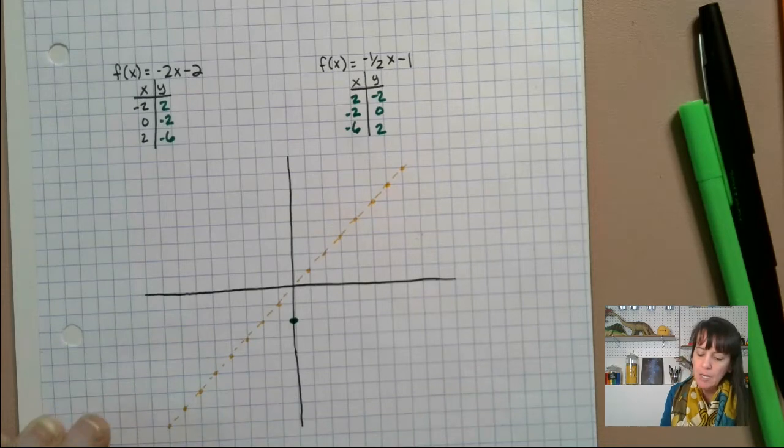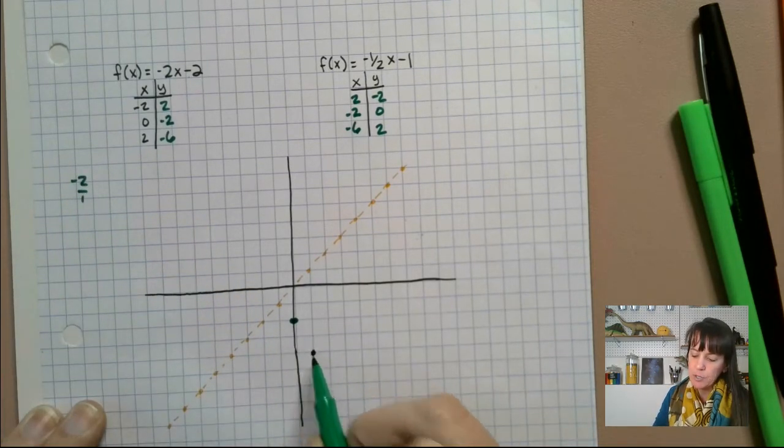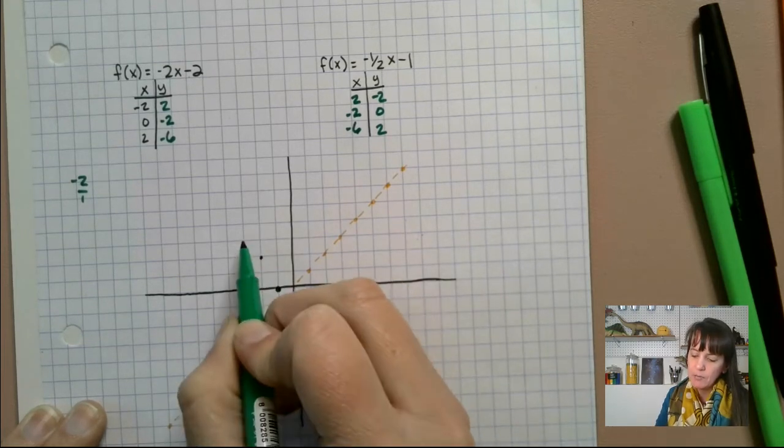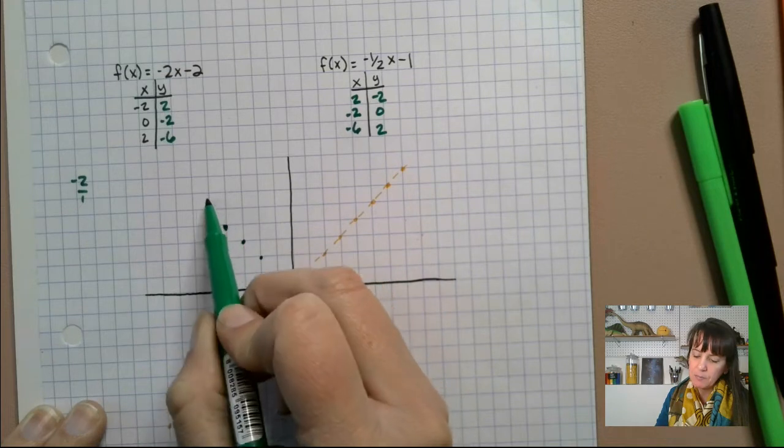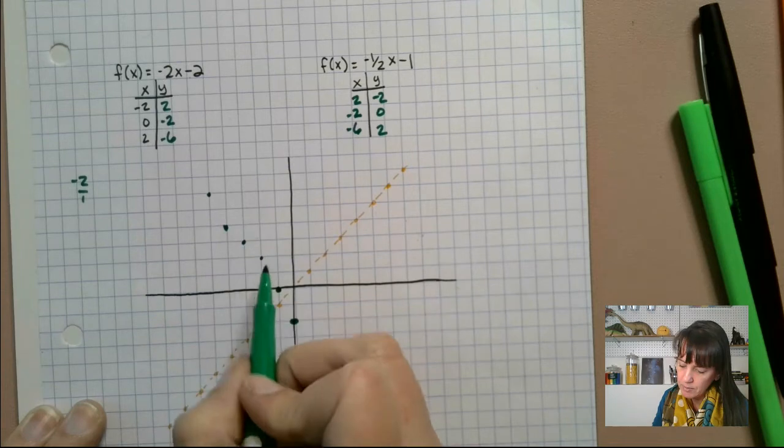So my slope is negative two over one, meaning I can go down two and in the positive direction one. I can also go up two and in the negative direction one. So I go like this. So up two over one, up two over one. We're going to disregard those other ones. Sorry about that, guys.